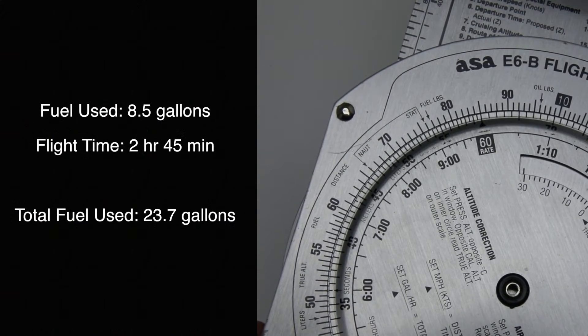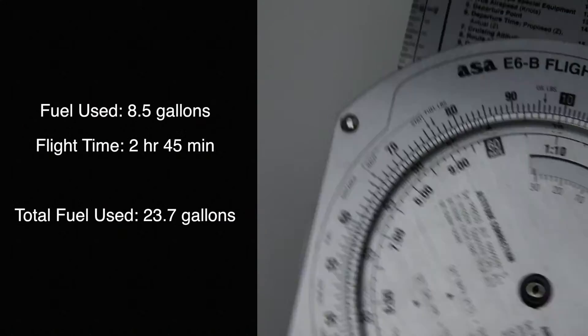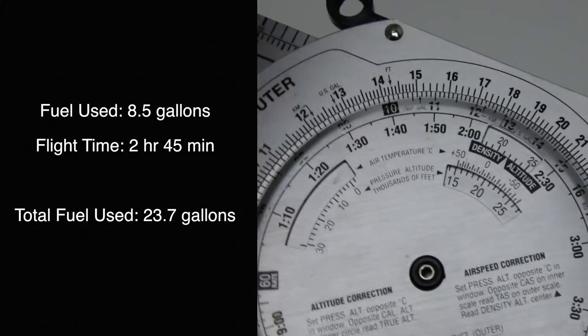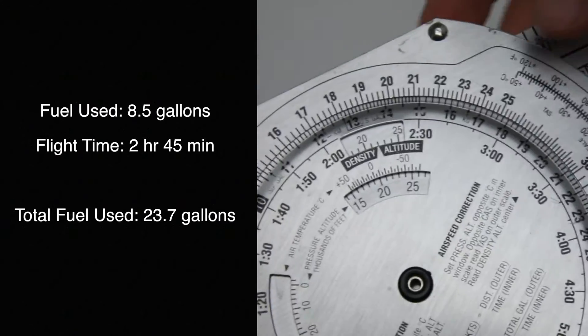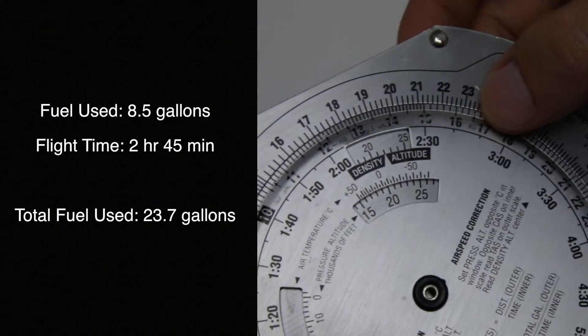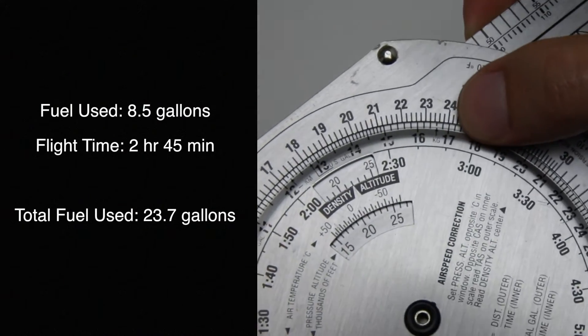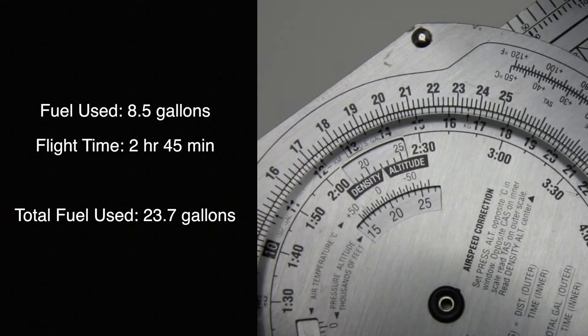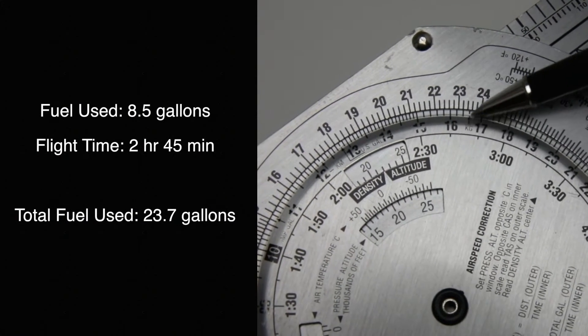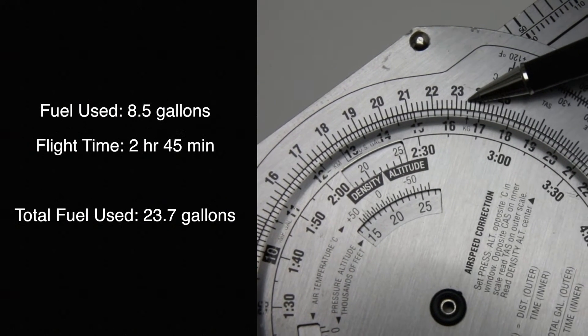And we're going for 2 hours and 45 minutes, so again we go on the inner scale for 2 hours 30, that should be 45 in the middle of that, so 2 hours 45 right about here. We're looking at approximately 23.7 gallons.